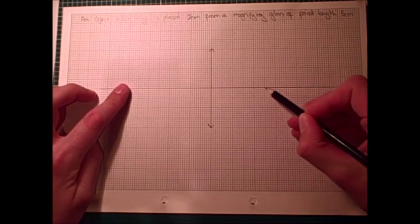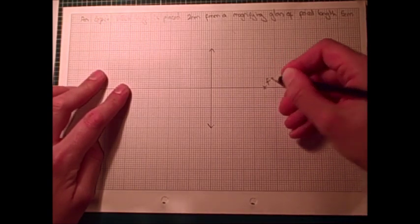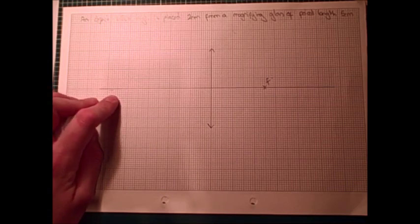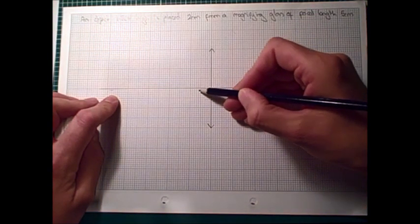So, 1, 2, 3, 4, 5. There's the focus. And then we're told that the object is placed 2cm away.